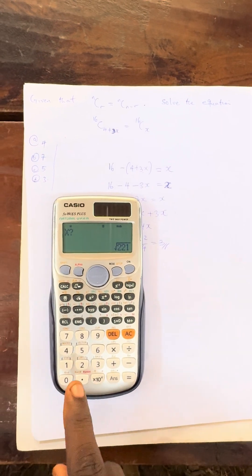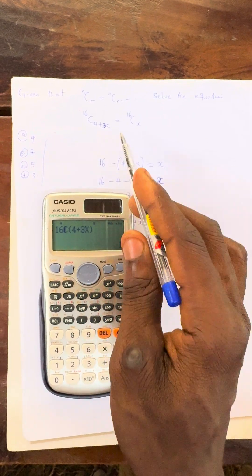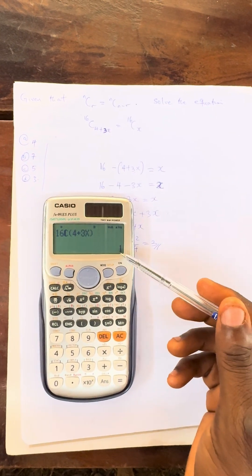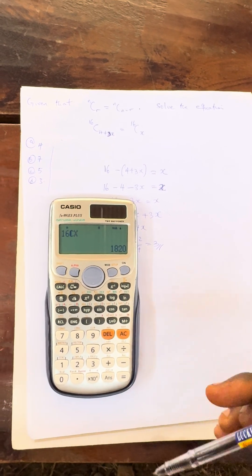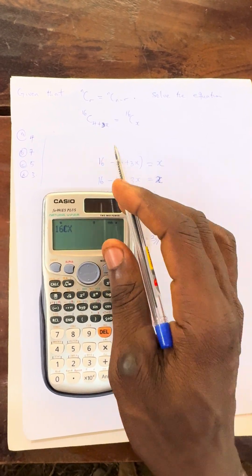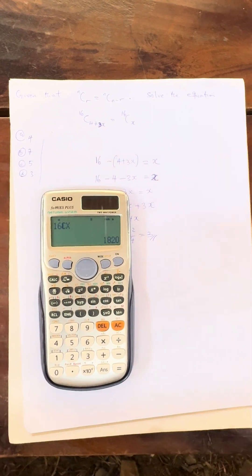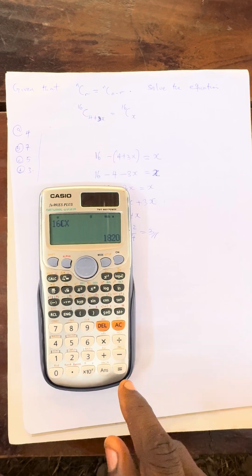The first option is 4. When we press 4, press equals to. You can see that it only gives us the word, the left side here. And what's the value for the left side? 1. Press equals to again, what's the right side? Right side is 1820. Can you see that? The left side answer is not equal to what? The left side answer is not equal to the right side. So that means 4 is not the answer.